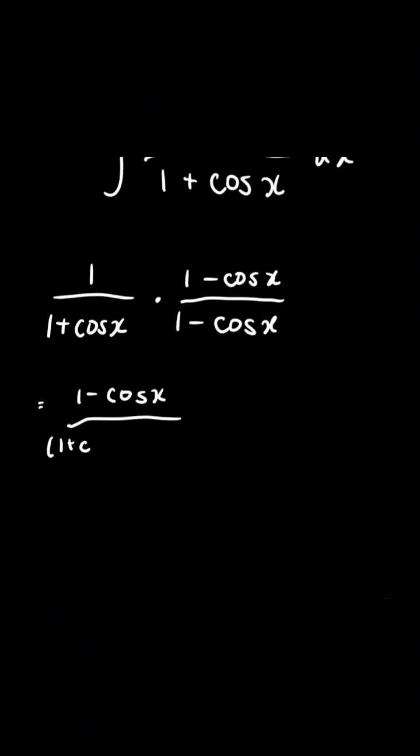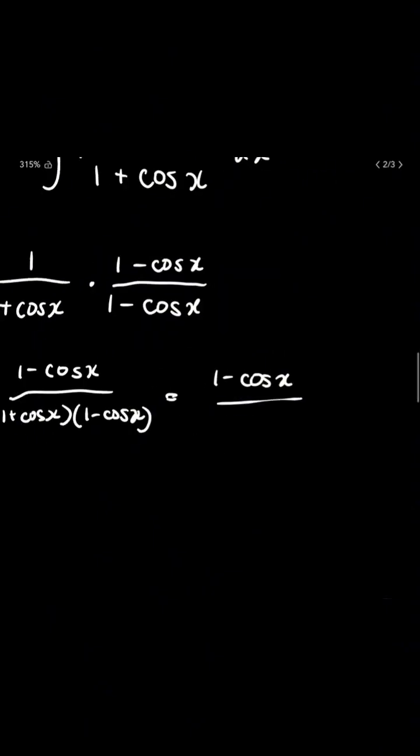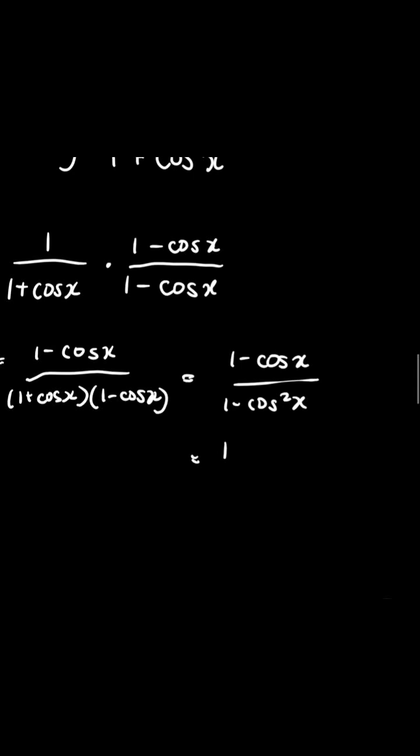We reach 1 minus cos x over 1 minus cos squared x. And we know by trig identities that 1 minus cos squared x equals sine squared x.